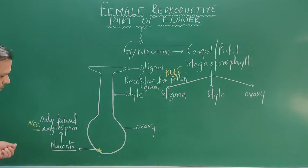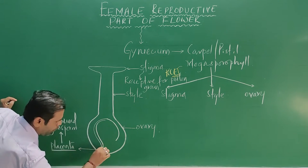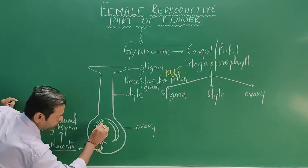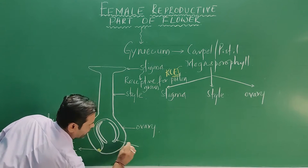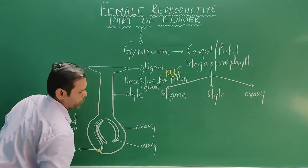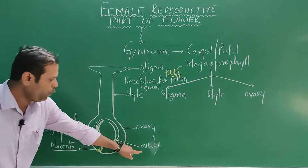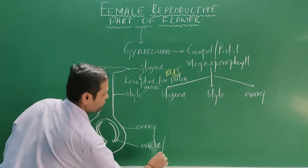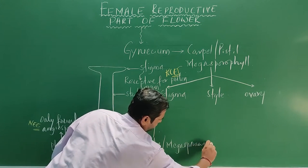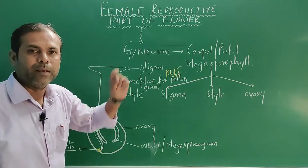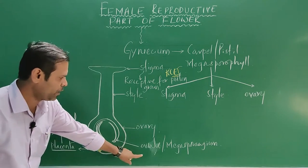Above this placenta, ovules are present — the ovule is attached to the placenta. The ovule is also known as megasporangium. In the male reproductive part we studied microsporangium — that butterfly structure. Similarly here it is called megasporangium.